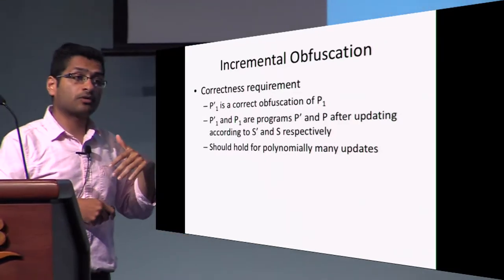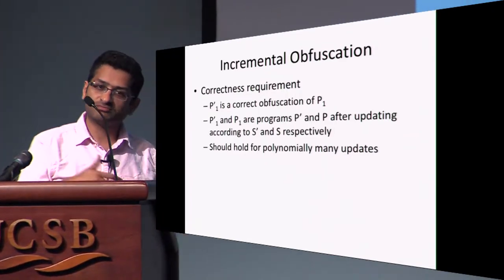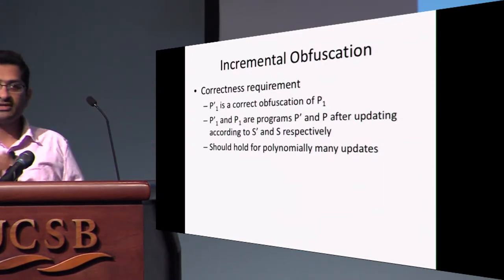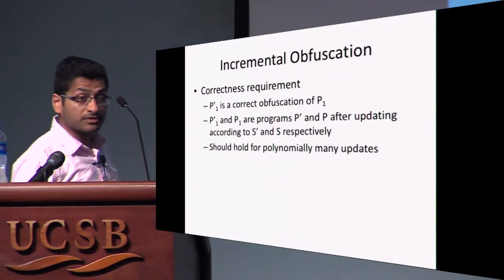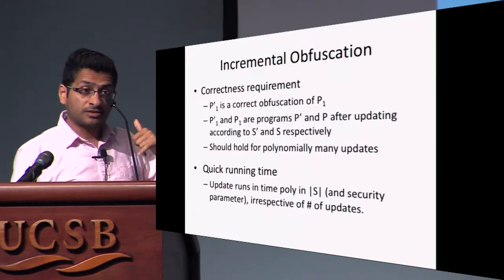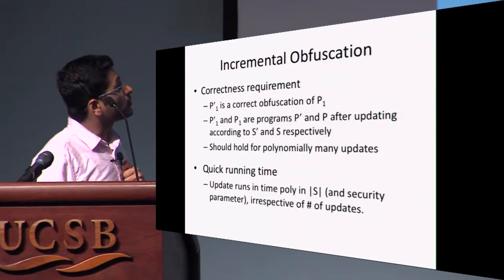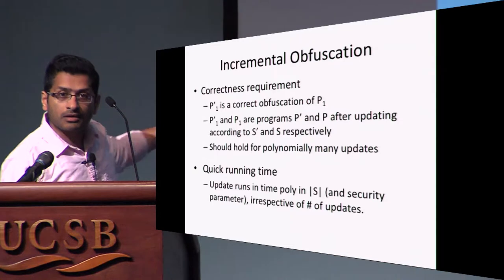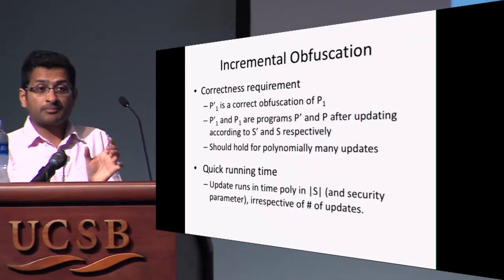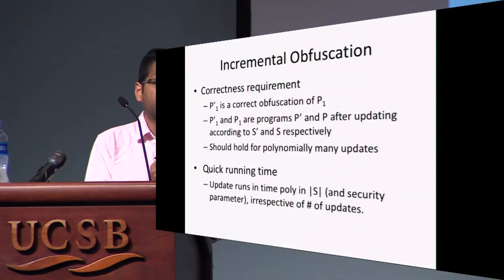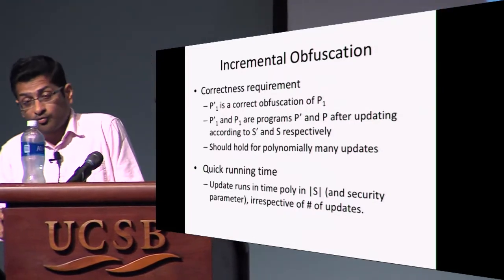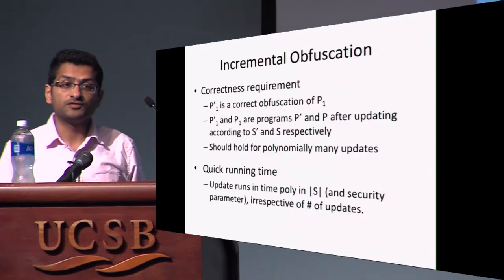We want this to work for arbitrary polynomially many updates, since software often needs many updates. I apply an update and send it to you; then I have a next update, and I want to keep doing this an arbitrary polynomial number of times. For every single update, the computational cost on my end, your end, and the communication cost should be proportional only to the size of the update and the security parameter — and independent of the total number of updates provided. So if the tenth update changes a few bits, I only need to communicate correspondingly few bits.